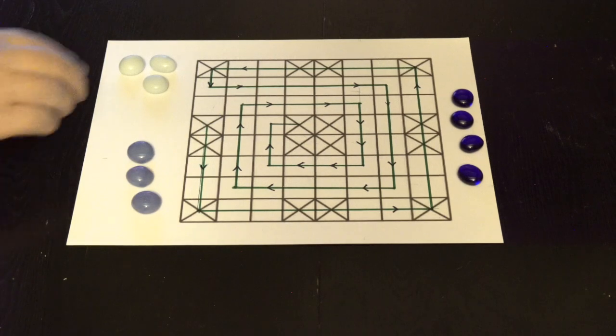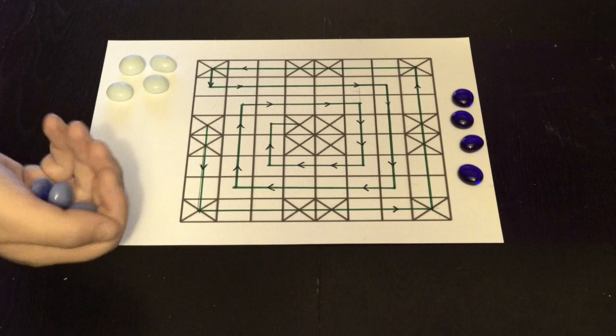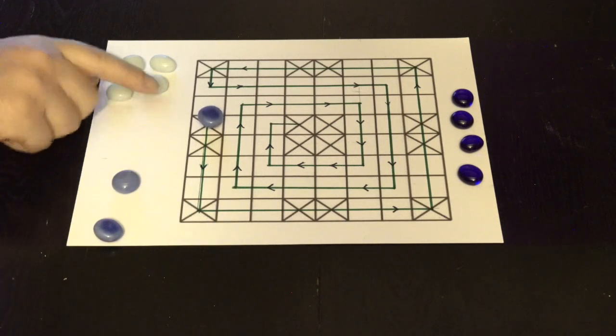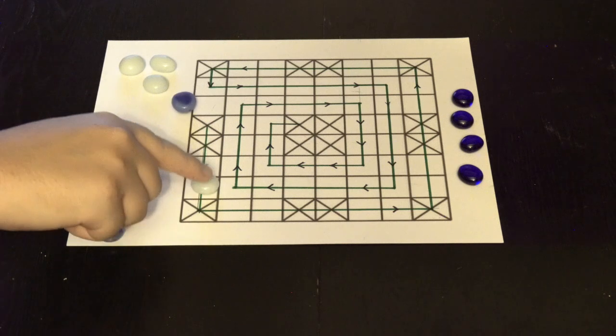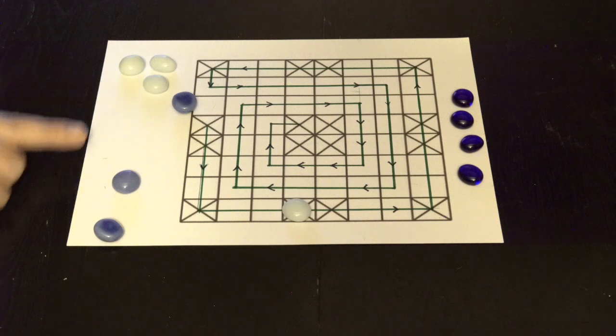Each bead or coin that's flipped face up is worth two spaces. As you can see, with two beads face up, this is four spaces. And this bead has landed here in a safe zone, marked with an X.